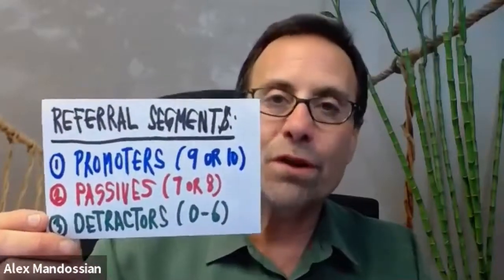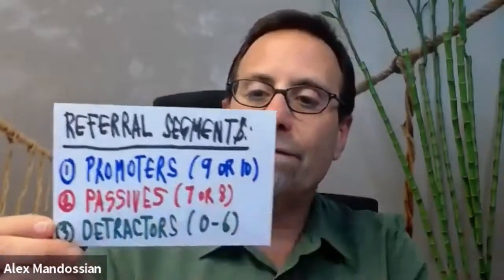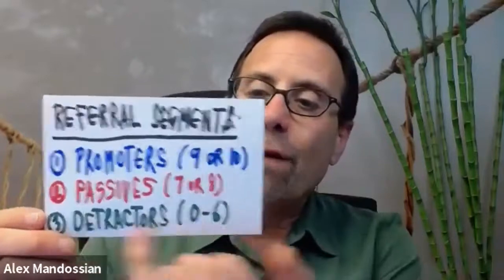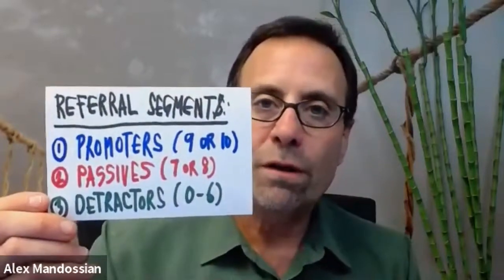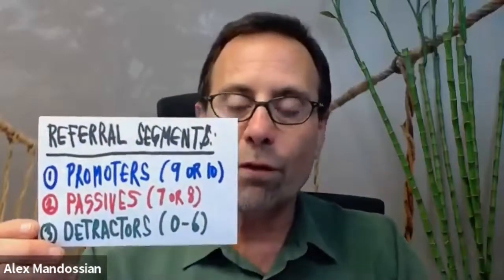A passive scores 7 or 8 — a 7 is a C, an 8 is a B-. A detractor scores 0 to 6. Detractors actually detract business away from you. If you want to create referents — people who generate referrals for you — the detractor will tell people not to come to you. For example, if you're a dentist and had a bad experience with a patient, they'll tell others never to see you again.